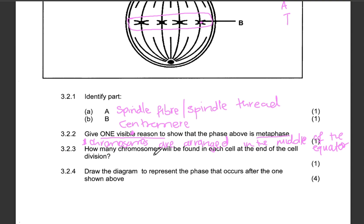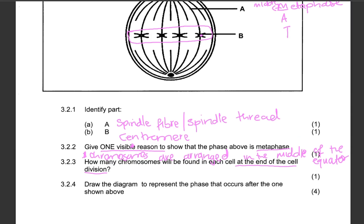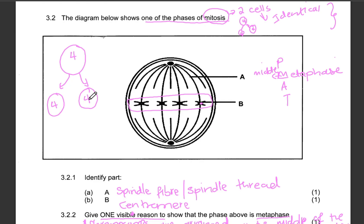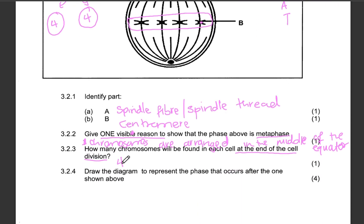Question 3.2.3: How many chromosomes will be found in each cell at the end of cell division? In the metaphase diagram, there are 4 chromosomes, which tells us the parent cell had 4 chromosomes. Since mitosis produces 2 cells, each cell will also have 4 chromosomes because the chromosome number is maintained in mitosis.